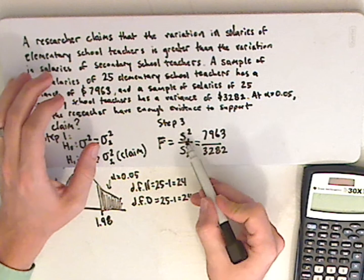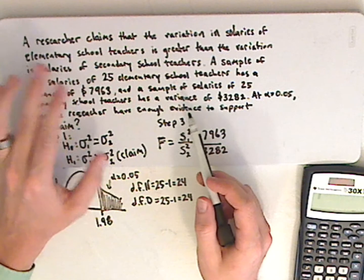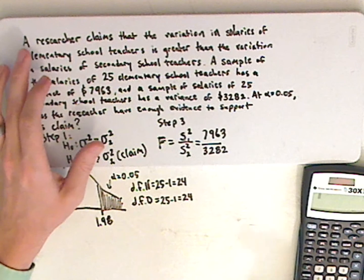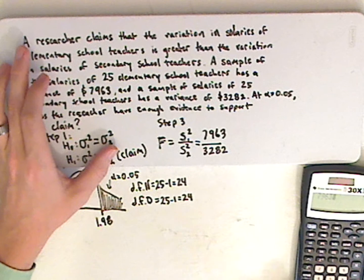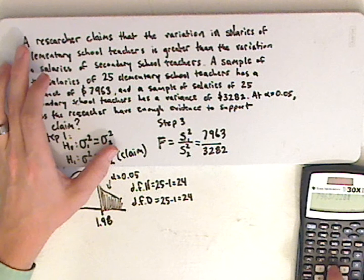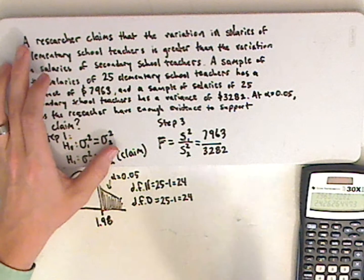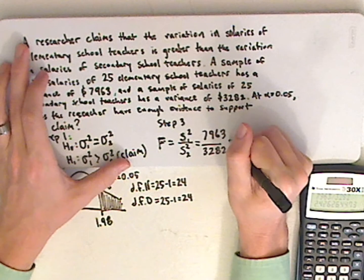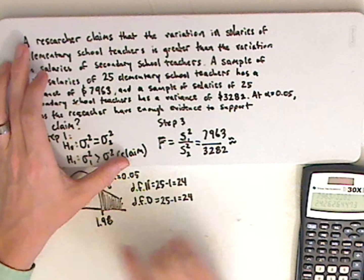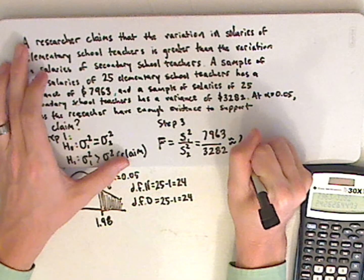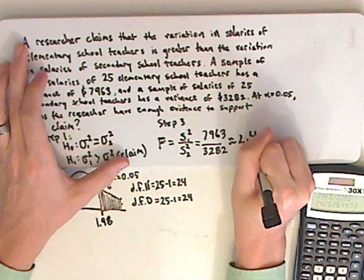If there were standard deviations given in the problem, then you would have to square them, but here you don't have to. So that would be 7,963 divided by 3,282. And that's going to be approximately, I'm going to use two decimal places just like over here. So it would be approximately 2.43.